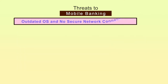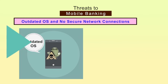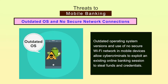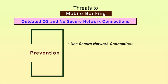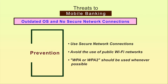The next threat is outdated operating systems and insecure network connections. Risk factors such as outdated operating system versions and use of insecure Wi-Fi networks on mobile devices allow cyber criminals to exploit an existing online banking session to steal funds and credentials. For prevention, use secure network connections — it's important to be connected only to trusted networks. Avoid the use of public Wi-Fi networks. More secure and trusted Wi-Fi connections identified as WPA or WPA2, requiring strong passwords, should be used.